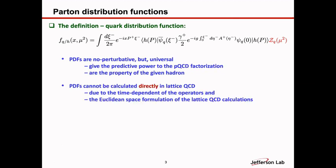When you connect to experiment, PDFs are non-perturbative and you cannot measure them directly. But they can be tested because they are universal. Because of the universality of PDFs in the factorization formalism, they give predictive power: you can measure them in one process and then predict them in another. They are the property of the hadrons. PDFs are non-perturbative in nature — you cannot calculate them directly due to the time dependence of the operators and the Euclidean space formulation of QCD calculations. I'll talk more about how we can take advantage of lattice QCD.